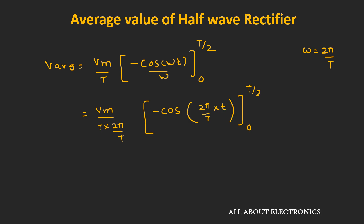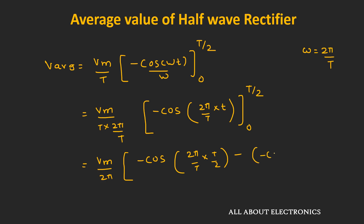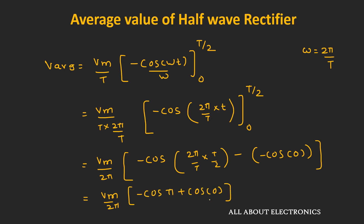Putting in the limits, we get V_average = Vm/(2π) × [−cos(π) − (−cos(0))]. We know that cos(π) = −1 and cos(0) = 1, so the expression becomes Vm/(2π) × (1 + 1) = Vm/(2π) × 2. Therefore, the average value of the half-wave rectifier comes out as Vm/π.